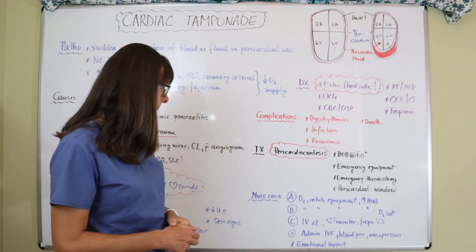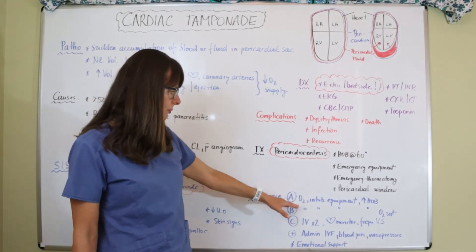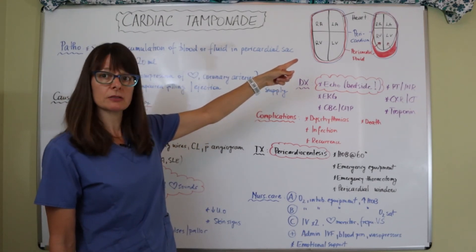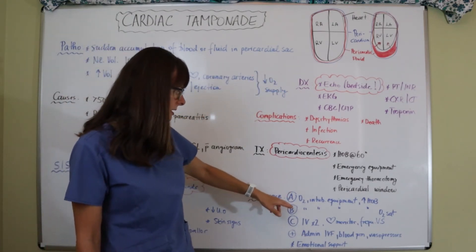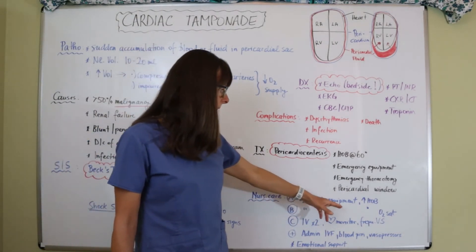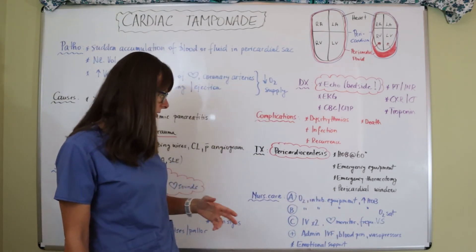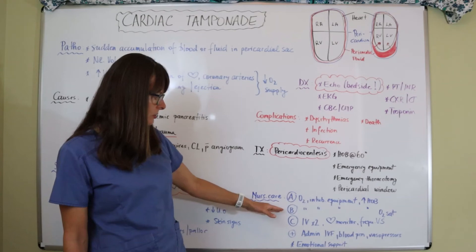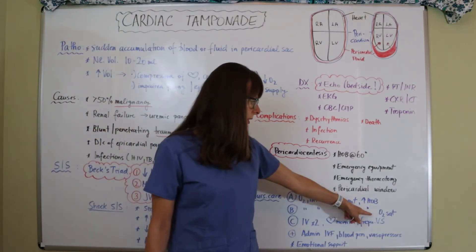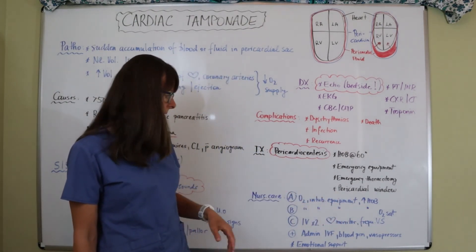In terms of nursing care, think of your ABCs. So we want to provide the patient with some O2 because we know that we have decreased O2 supply if the heart muscle can't pump the way it usually does. We want to have intubation equipment ready at the bedside. We want to make sure we elevate the head of the bed just to facilitate ease of breathing for the patient. Basically the same thing applies, and in addition we want to make sure we measure the patient's O2 sat to see where they are and detect any changes.